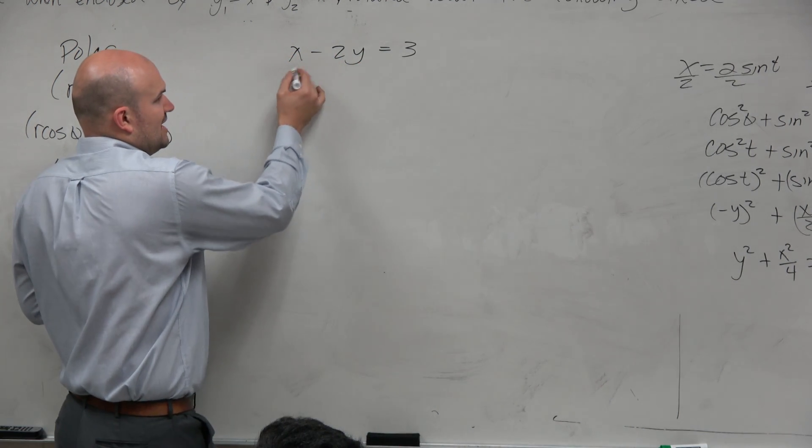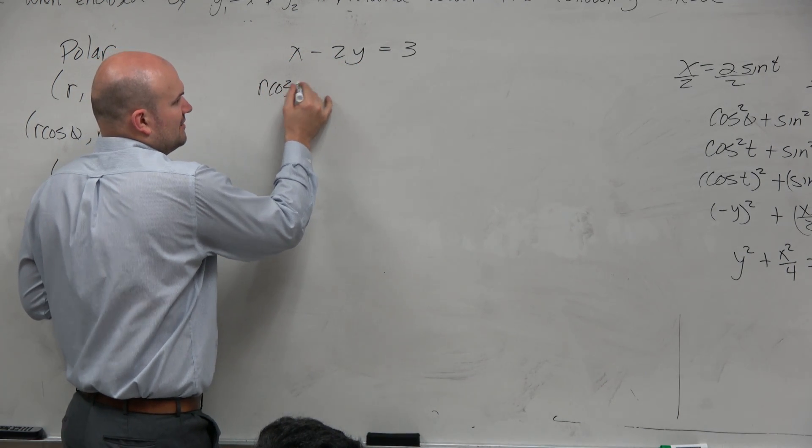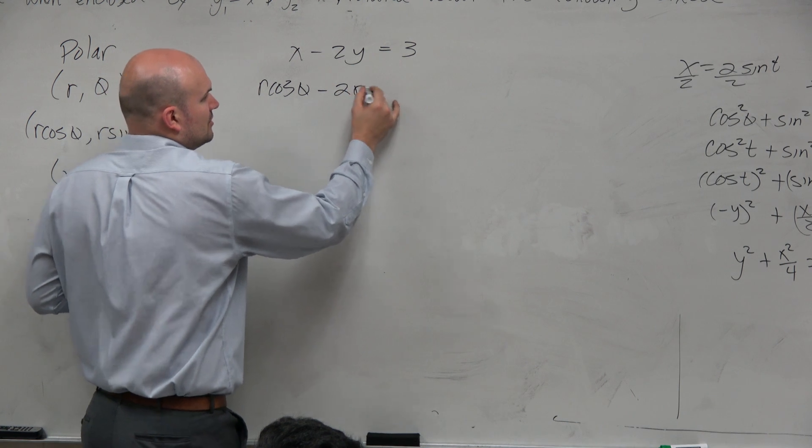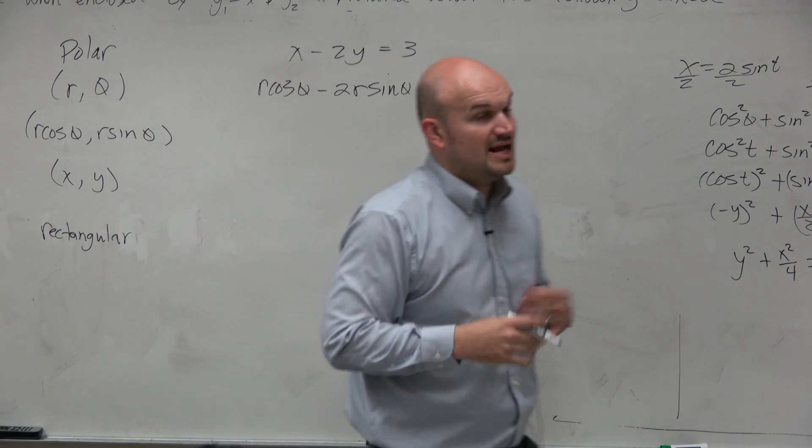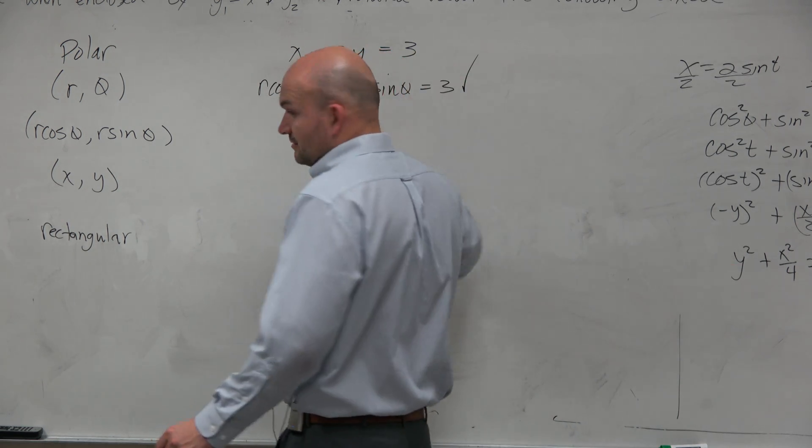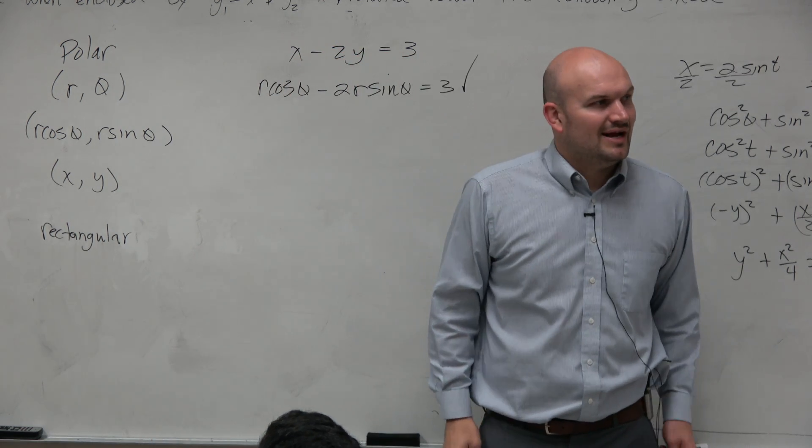So here's an x. I can rewrite that as r cosine of theta minus 2r sine of theta equals 3. Now technically, that's in polar form. Done. Wasn't that bad.